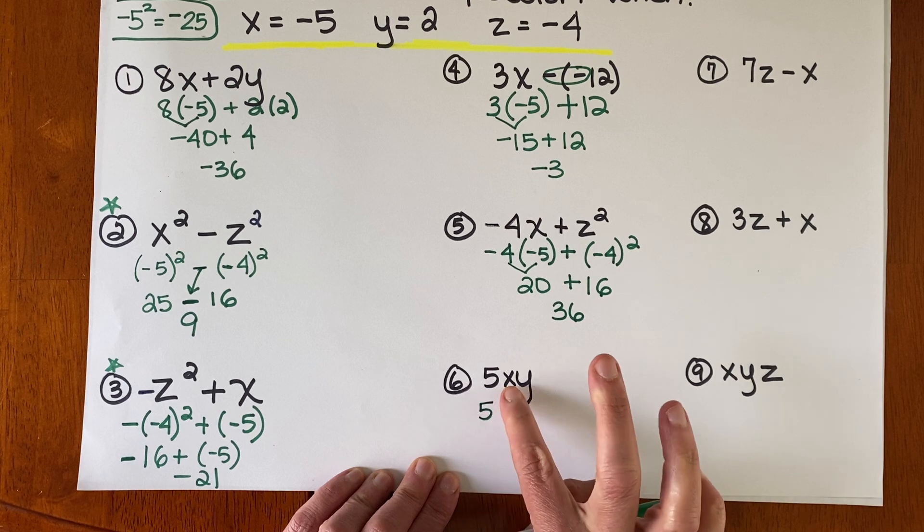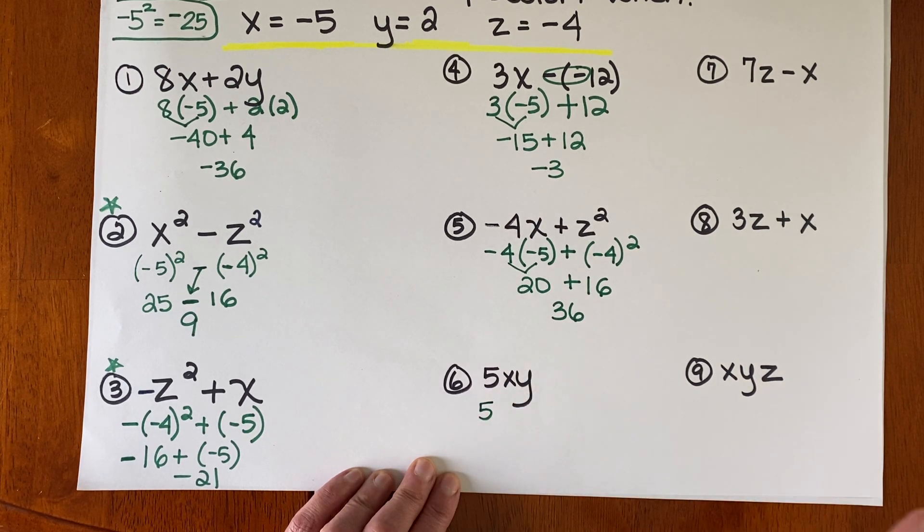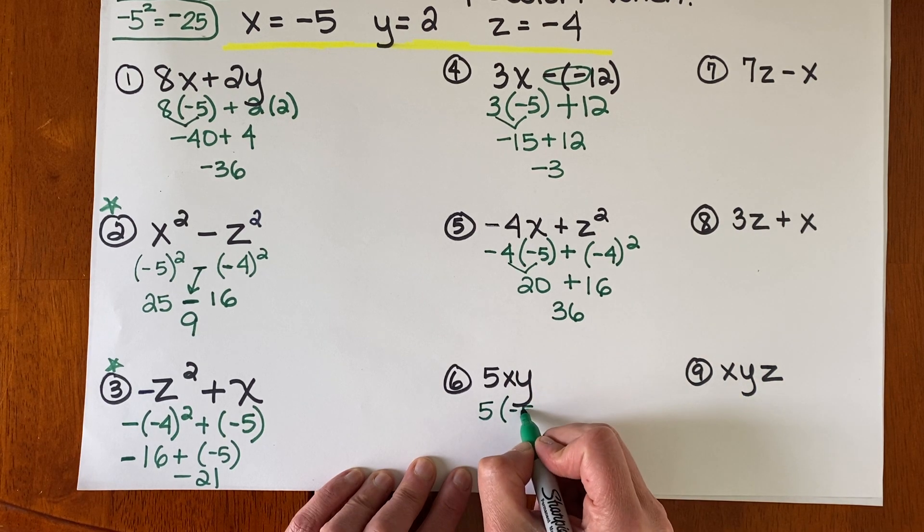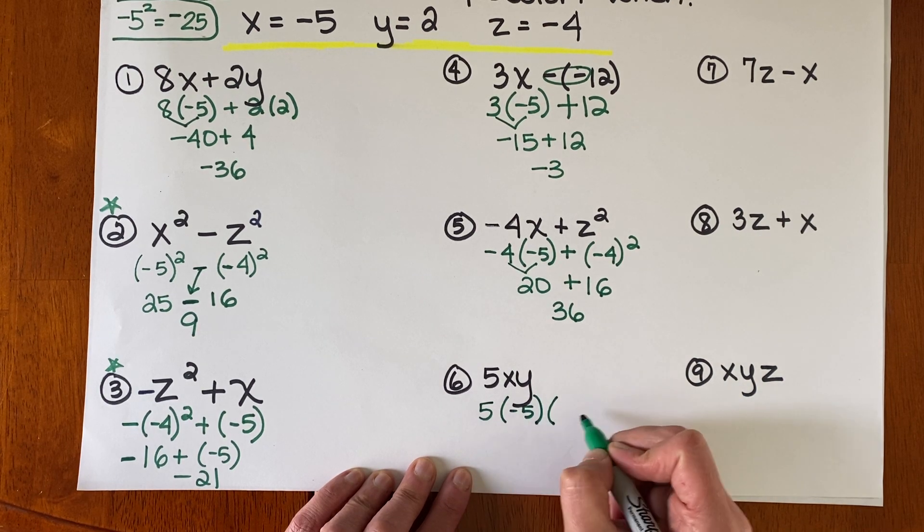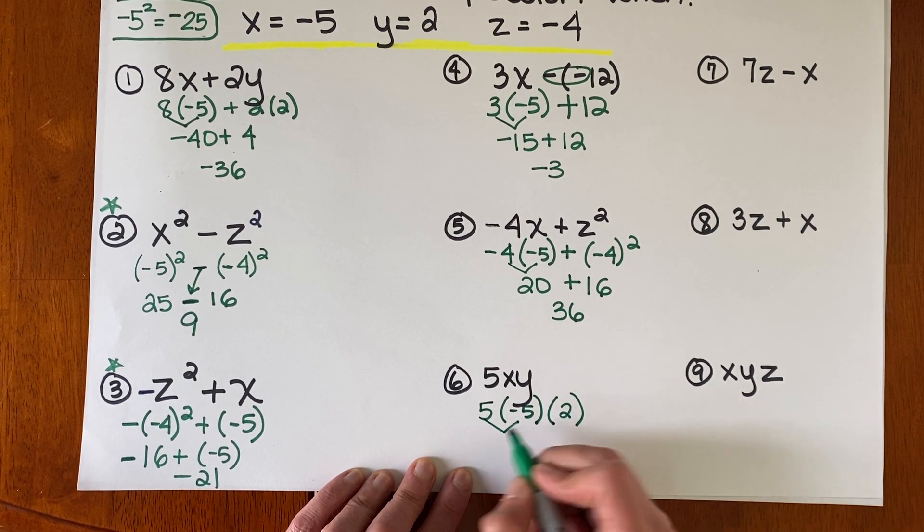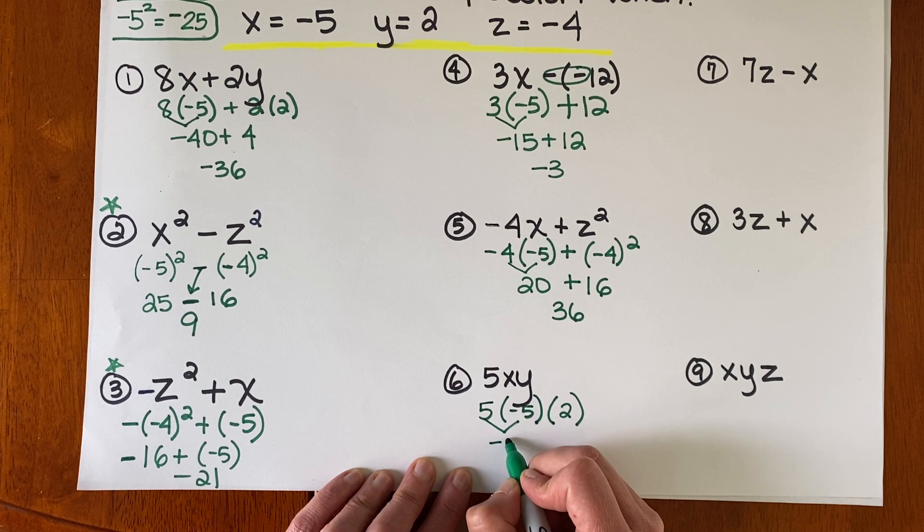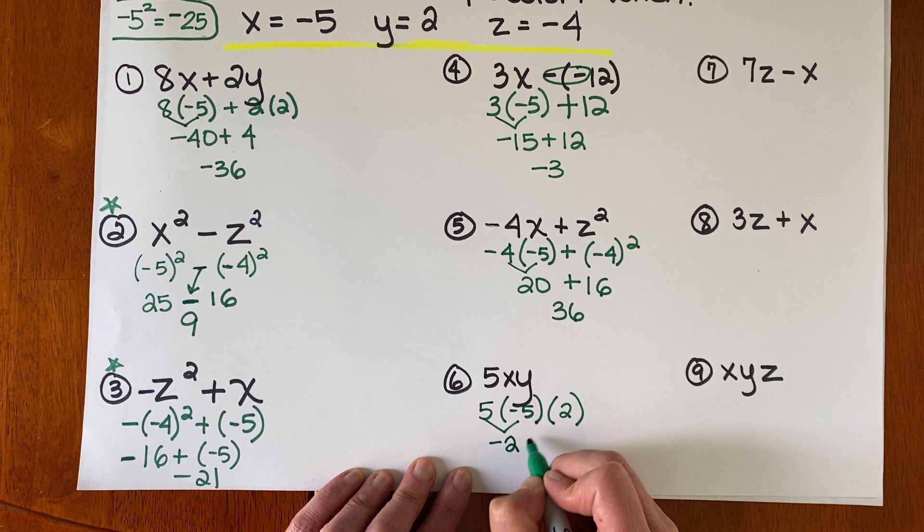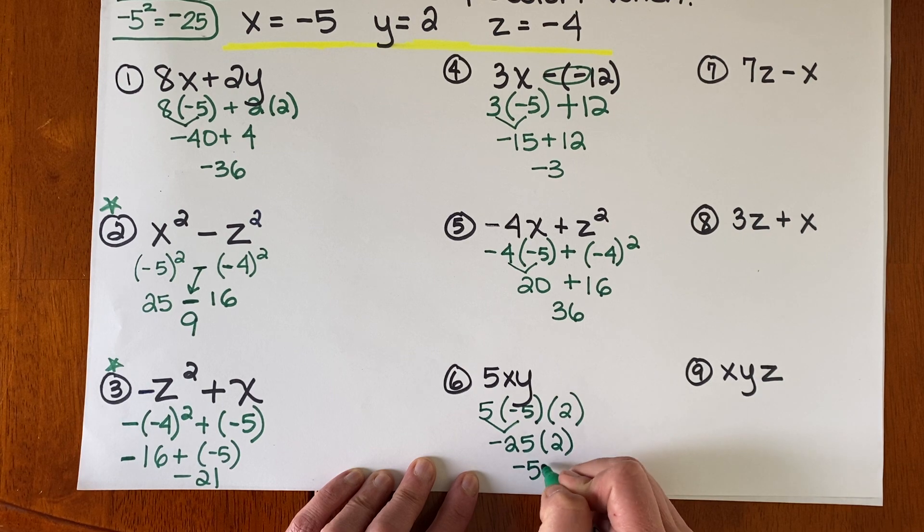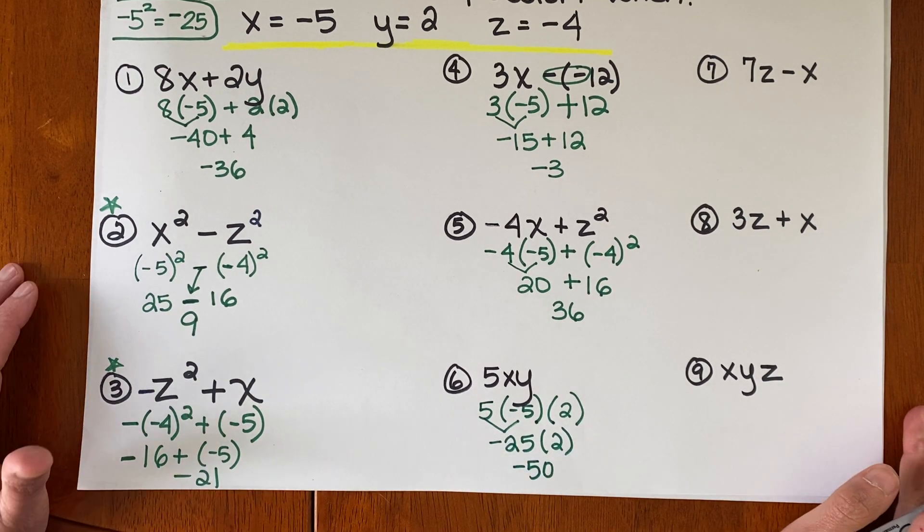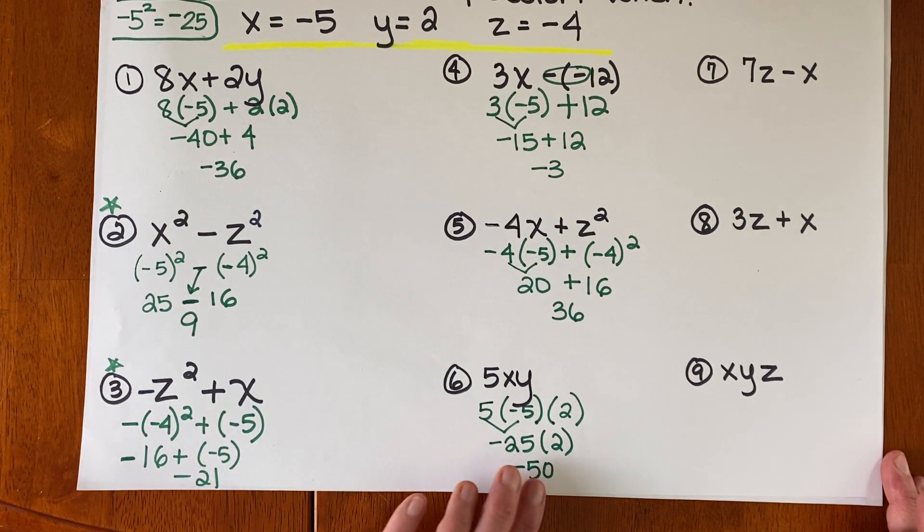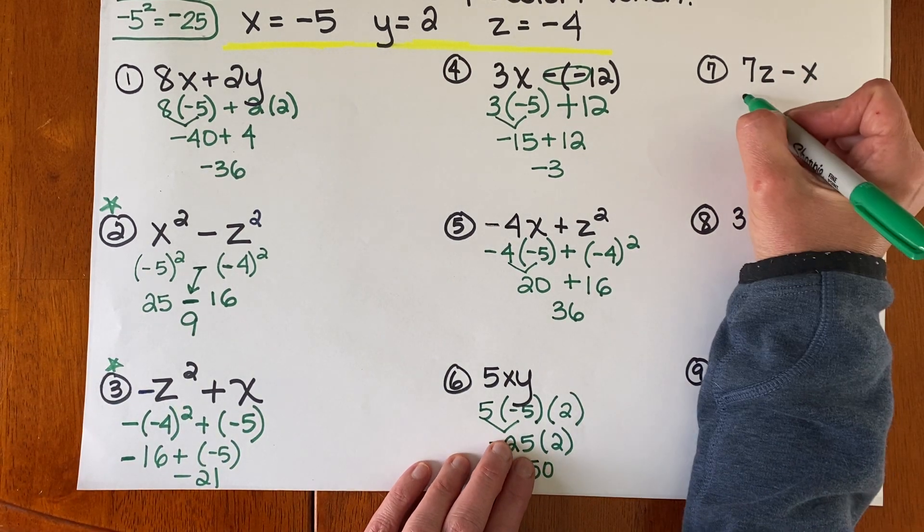Kids will say to me, is this 5 times Y? Never. This is 5 times X times Y. So 5 times X times Y. Okay. So that's 5 times 5 is 25. Positive times negative is negative. And my final answer is negative 50. Again, you see me getting a little fast. These numbers are small. So just be careful.